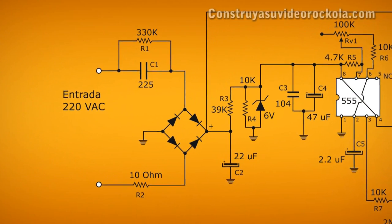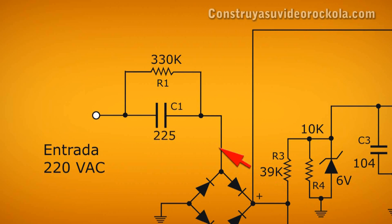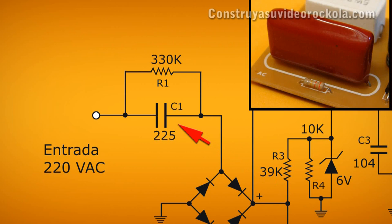This strobe light system is powered by a single source designed without a transformer. It incorporates a tank circuit formed by a capacitor of 2.2 microfarad polyester and a resistance of 330K.